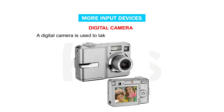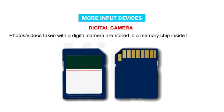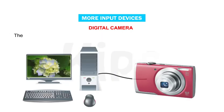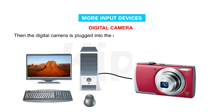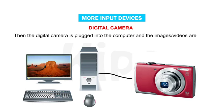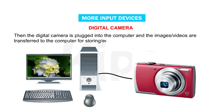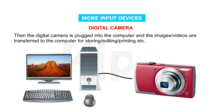A digital camera is used to take photographs and record videos. Photos or videos taken with a digital camera are stored in a memory chip inside the camera. Then the digital camera is plugged into the computer and the images or videos are transferred to the computer for storing, editing, printing, etc.